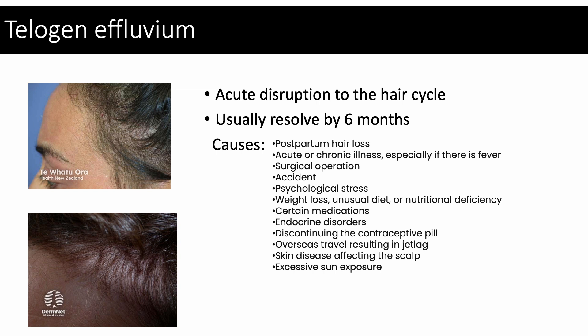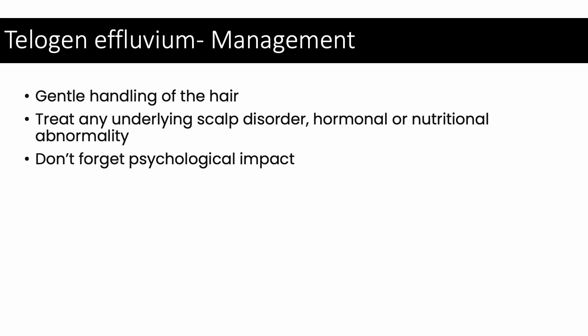It is important to differentiate telogen effluvium from anagen effluvium, where there is disruption of the anagen phase of the hair cycle, which commonly results from chemotherapy. Telogen effluvium is a form of non-scarring alopecia and tends to resolve by 6 months. Management includes conservative measures such as gentle handling of the hair, and treating any underlying scalp, hormonal, or nutritional abnormality. As with any hair disorder, do not forget to explore and act on any psychological impact.